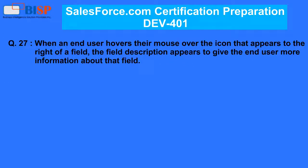Question 27. When an end user hovers their mouse over the icon that appears to the right of a field, the field description appears to give the end user more information about that field. A. True. B. False.